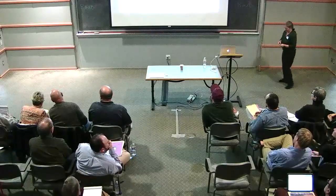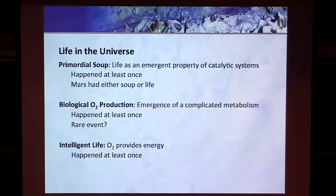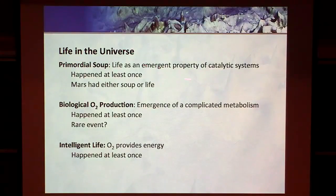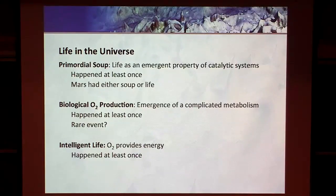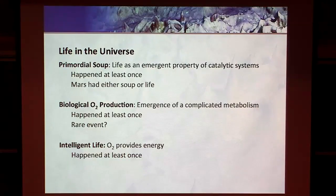As a scientist, when I think of life in the universe, I'd like to think of it as a primordial soup with an emergent property of a catalytic system. We know it happened at least once on Earth, and Mars either had life or not — there were organics there, and we're asking that question in a really rigorous scientific way. Biological oxygen production is a fairly complicated evolutionary path that happened at least once. I'm going to guess it's a rare event, but it'd be really nice to be wrong — because oxygen is a really huge energy source for larger organisms like ourselves.